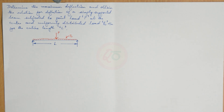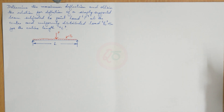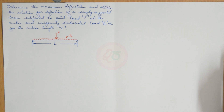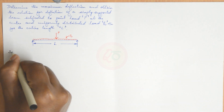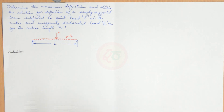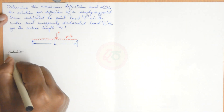The problem statement is: a simply supported beam subjected to a point load at the center and a uniformly distributed load P naught for its entire length. We need to find out the relation of deflection as well as the maximum deflection that occurs at the center using the Rayleigh-Ritz method. We will proceed with the same procedure that we followed for the previous problems. The very first step is to formulate the potential energy functional.